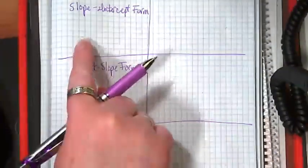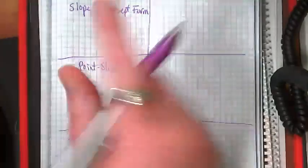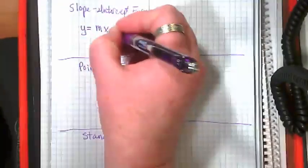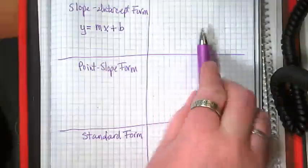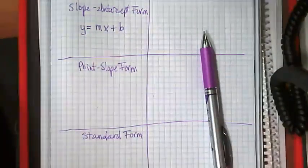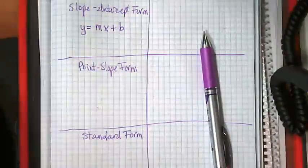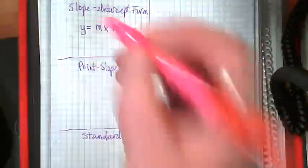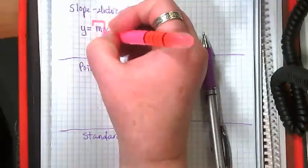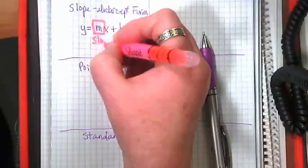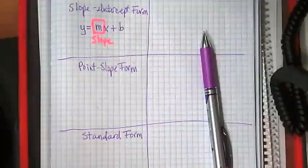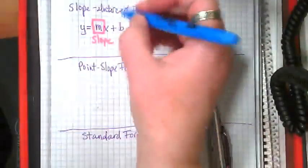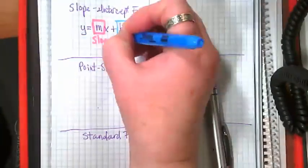We already know the first one, so let's take some things that we know about it. We know that this equation is y equals what? Mx plus b. We know that the m is our slope. What do we know about our b? It is our y-intercept.